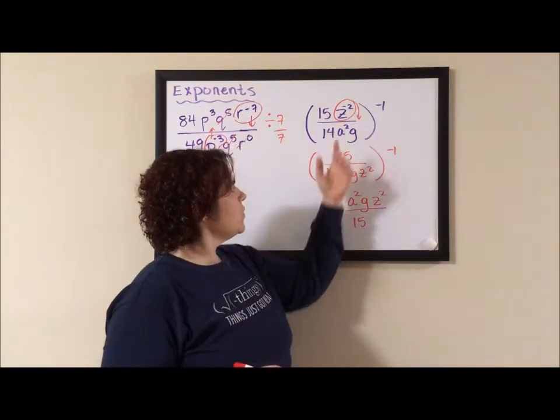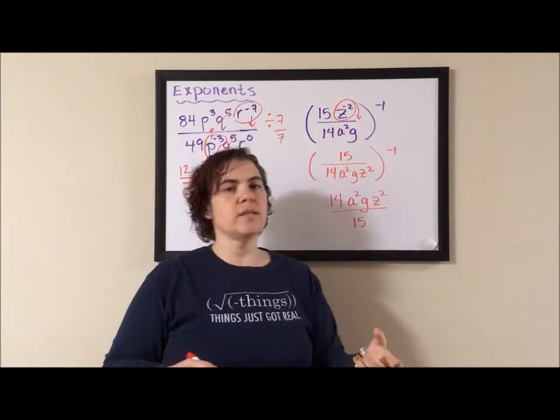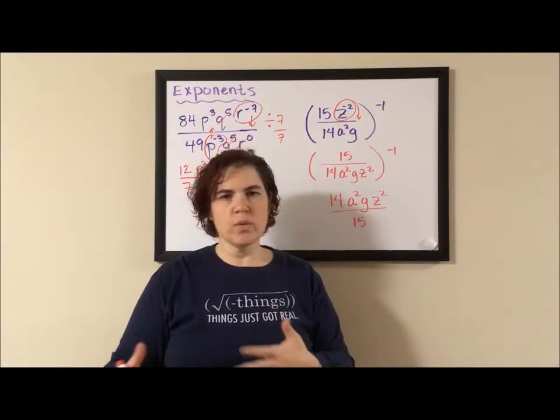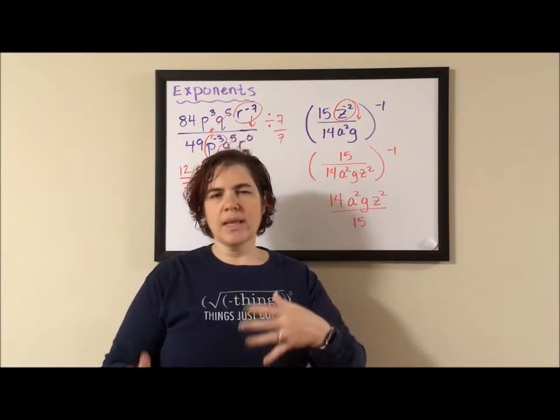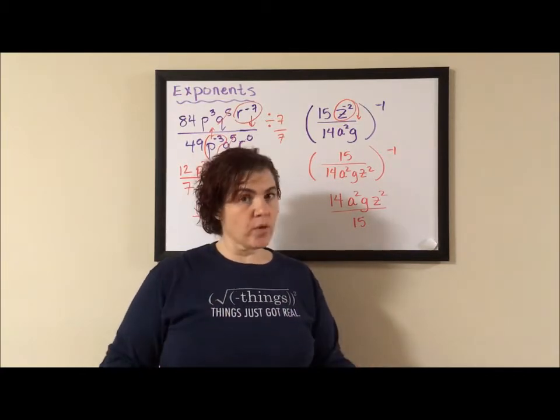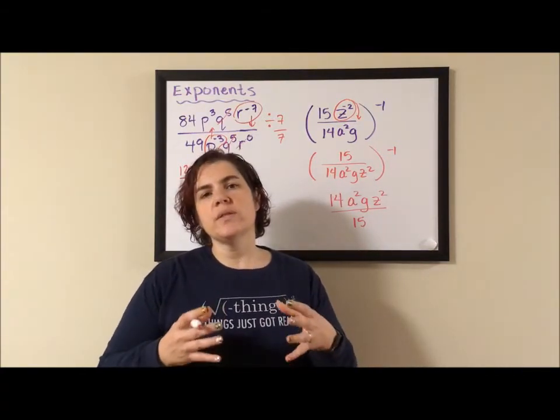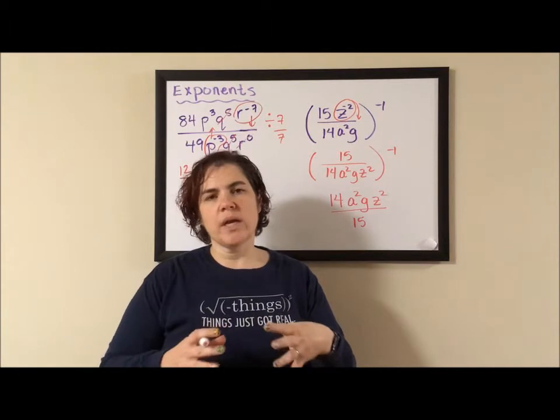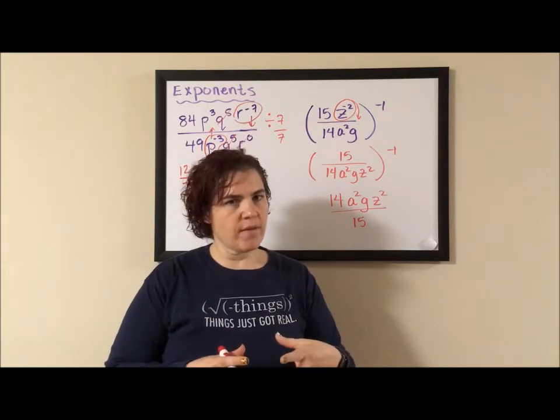In this problem, doing the reciprocal first and then moving the z would have been pretty simple. It would have been the same amount of work, but I like to get a process that I can do on every problem. And when the parentheses, when the fraction within the parentheses is really ugly, it's nice to be able to simplify that first.